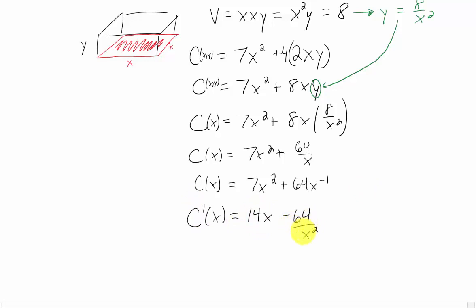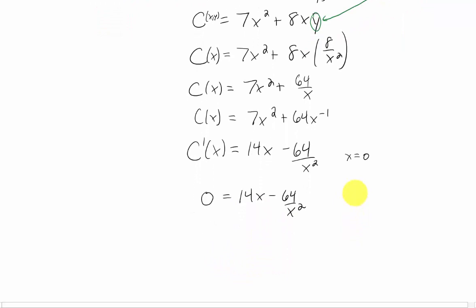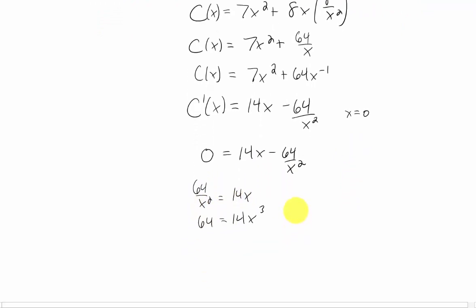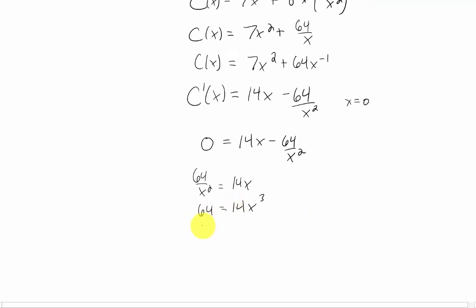Note that our first derivative is undefined when X equals 0, so we'll have to look at that as a critical point. As far as our other critical points are concerned, we can set that first derivative equal to 0 and solve for X. Multiply both sides by X², divide both sides by 14, and take the cube root of both sides. We get that X is the cube root of 32/7.